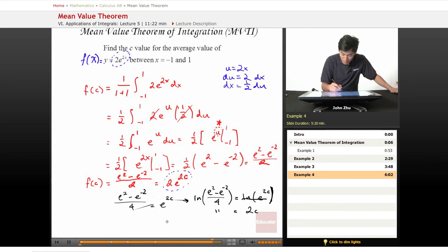So then c simply becomes ln of e squared minus e to the negative 2 over 4 divided by 2. And if we solve for this, we're going to get something like 0.3.